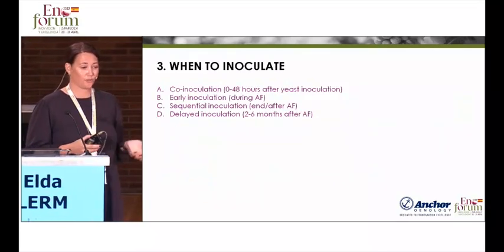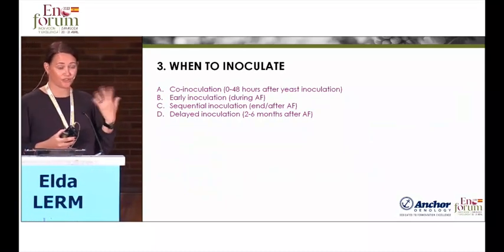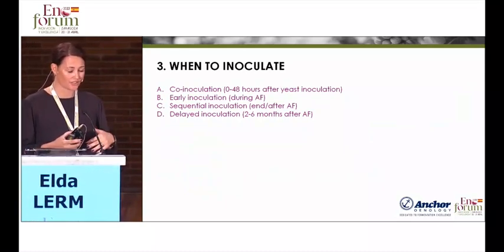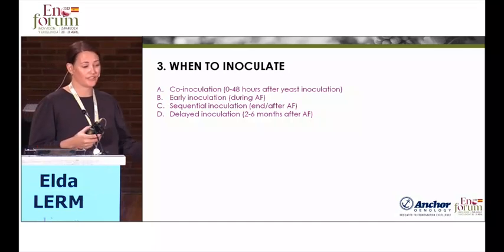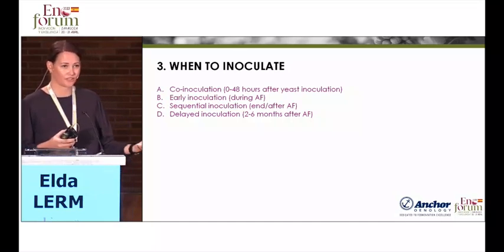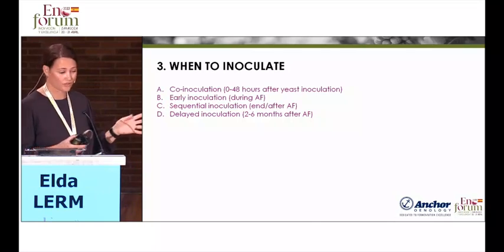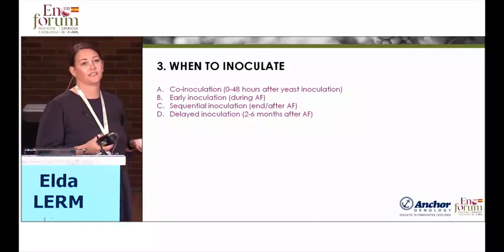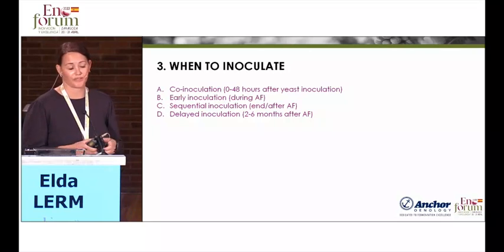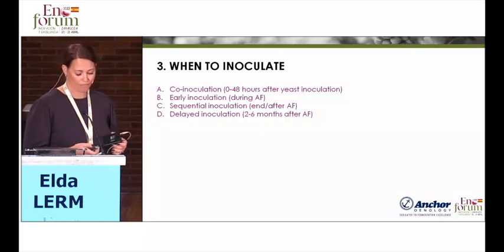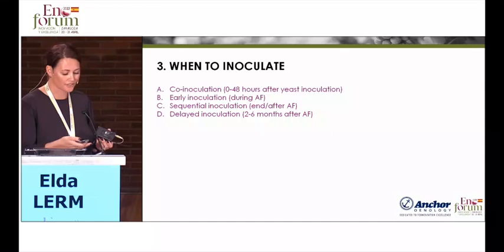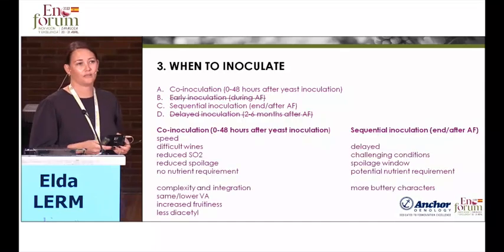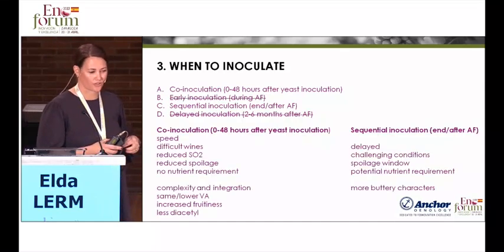When it comes to when to inoculate, the two main options are co-inoculation and sequential. In the past, we also had early inoculation — during alcoholic fermentation — which gave worse results — and delayed inoculation. But for probably the last 10 to 20 years, the two main approaches have been co-inoculation and sequential.